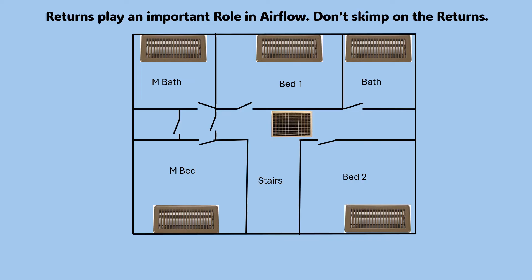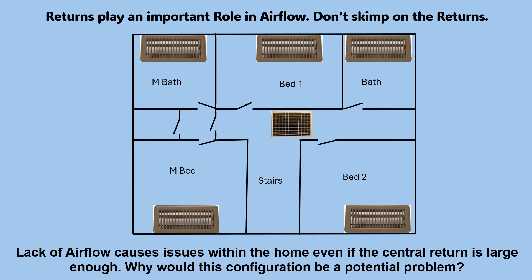No contractor goes through a residence and says they're not going to put a supply in a room, but many try to limit the amount of returns, as you see in this example. Lack of airflow causes issues within the home even if the central return is large enough. This causes a problem because the doors in each one of these rooms without a return act as dampers. When the doors are open, the air can make it back to the return. When they are closed, the air can't make it back to the return, and the central return is not getting the return air from that room, lowering airflow.